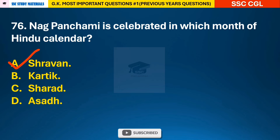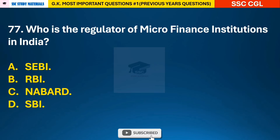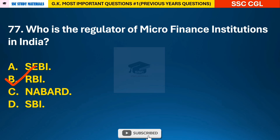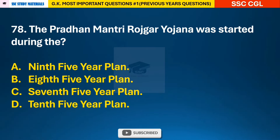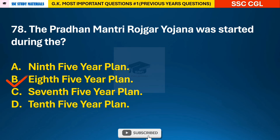Question 77: Who is the regulator of microfinance institutions in India? — answer B: RBI is the regulator of microfinance institutions in India. Question 78: The Pradhan Mantri Rojgar Yojana was started during the — answer B: Eighth Five-Year Plan.